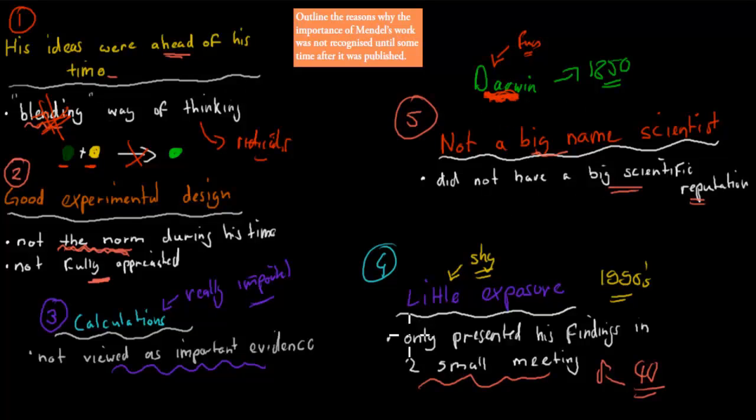So these were the five main reasons why his work didn't become significant until the 1900s, after his actual death. So I'll go over them again. First, his ideas were actually too far ahead of his time. So the idea was blending, that things always blended, that the characteristics blended. And he had a different idea. He said that it was the idea of dominance and recessiveness. And those were really not on the radar back then. So they weren't believed back then.